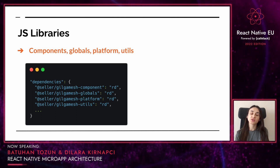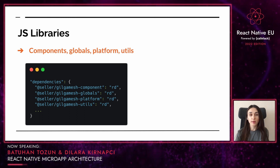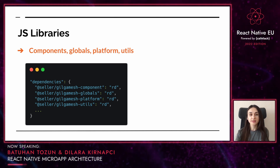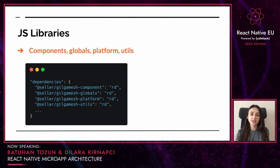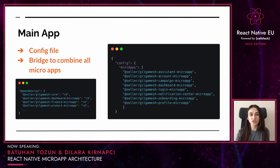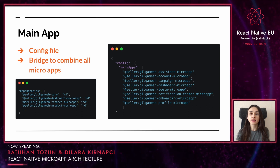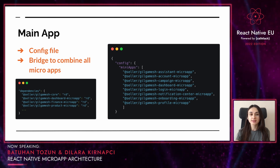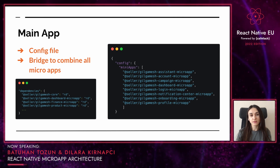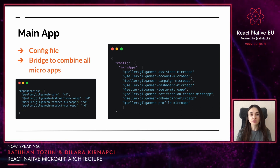Another part of the microapp architecture is our JavaScript libraries. Our components, global definitions, and utility methods were in the main application repository before the microapp architecture. Then they were separated from the monolithic application and created as npm packages. If a microapp application needs the JS libraries, it can use them by adding them as a dependency. In our structure, we have an npm package for bridging all microapps and the core application — we call it the main application. The main application has a config file containing microapp imports. We add the core app and microapps as dependencies to the main application, and the core application loads microapps with the config file. We run and build the application through this main application.